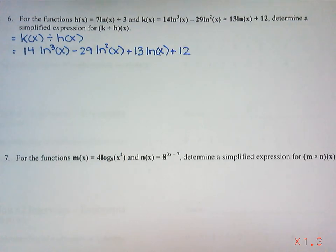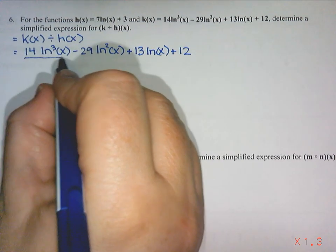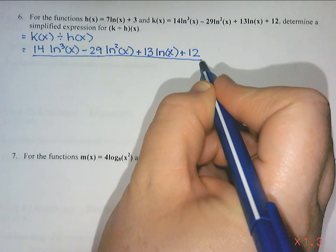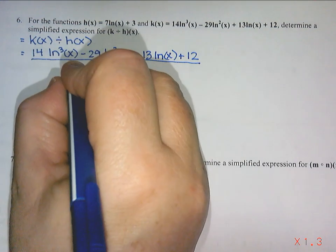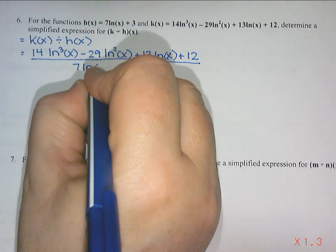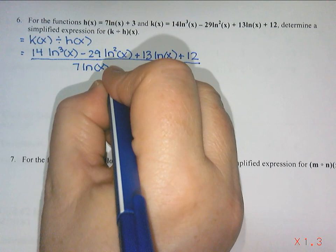And then when I do the division, I'm going to write it as a fraction just to save myself some space. We are dividing by h of x, which is 7 ln x plus 3.